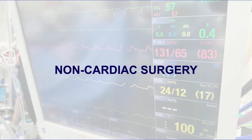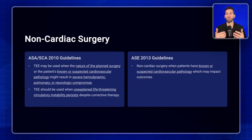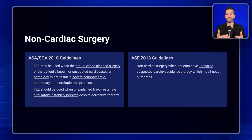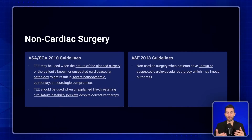There's also evidence for TEE in non-cardiac surgery. Some of these guidelines are more vague, such as when the nature of the surgery or the patient's known or suspected cardiovascular pathology might result in hemodynamic, pulmonary, or neurologic compromise — basically, if you think the patient might do really poorly, use TEE. And if there's unexplained life-threatening circulatory instability that persists despite corrective measures, this is where rescue echo comes into play. The ASC guidelines are even more vague, stating use TEE if the patient has known or suspected cardiovascular pathology that may impact outcomes. The takeaway: use your clinical judgment — if the patient is high risk and the information from TEE could help management, it may be indicated.